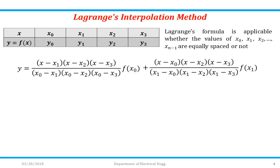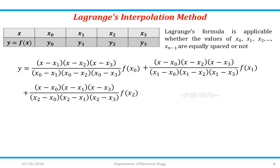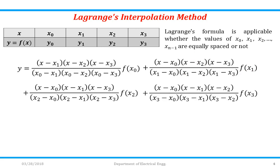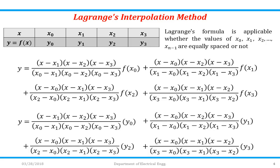The second term is [(x-x0)(x-x2)(x-x3)] / [(x1-x0)(x1-x2)(x1-x3)] × f(x1). Again, the x1 term is not present in the numerator. Similarly, you can write the formula for the f(x2) and f(x3) terms. In many books, instead of writing f(x0), f(x1), etc., you can write y0, y1 and so on.